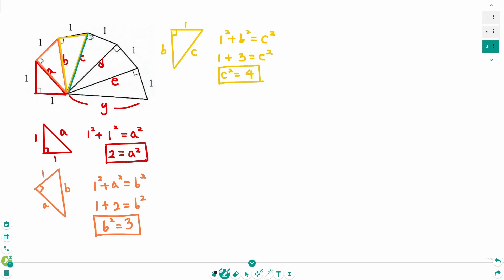In the fourth triangle: C, 1, and D. Then 1 squared plus C squared equals D squared. Then 1 plus C squared, which equals 4, equals D squared. Then D squared equals 5.